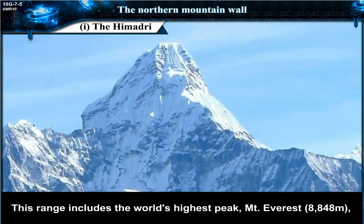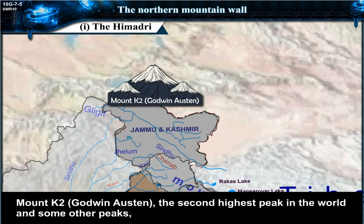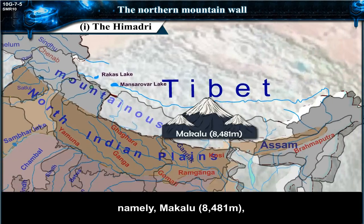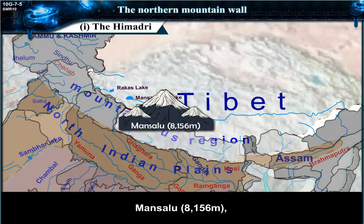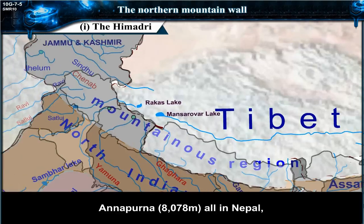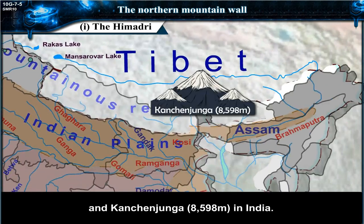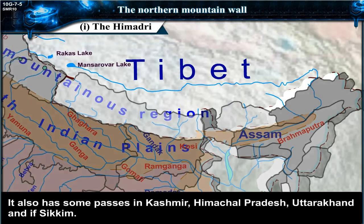This range includes the world's highest peak, Mount Everest at 8848 meters, Mount K2 or Godwin Austen — the second highest peak in the world — and some other peaks: Makalu at 8481 meters, Mansalu at 8156 meters, Annapurna at 8078 meters, all in Nepal; Nanga Parvat at 8126 meters and Kanchanjunga at 8598 meters in India.